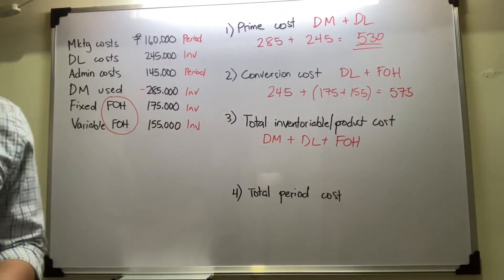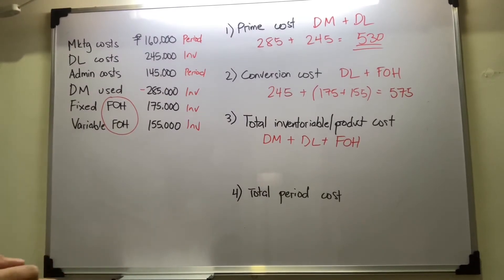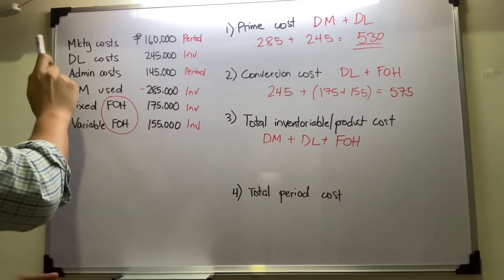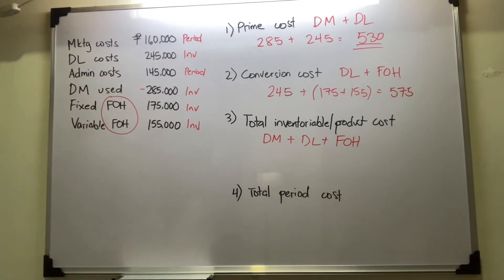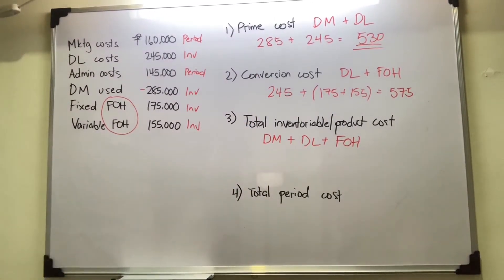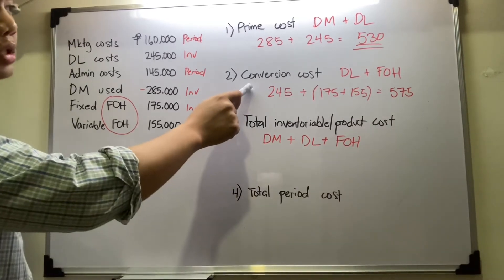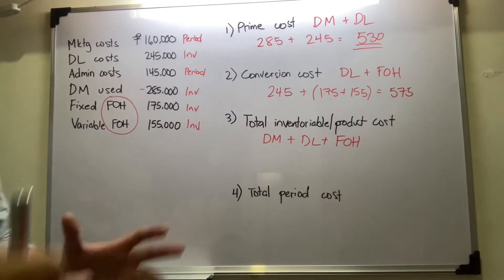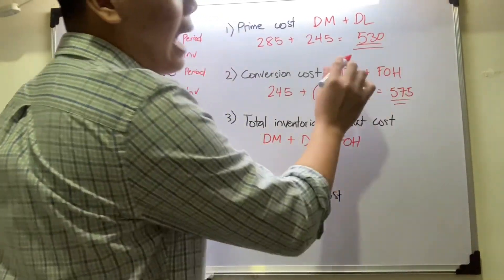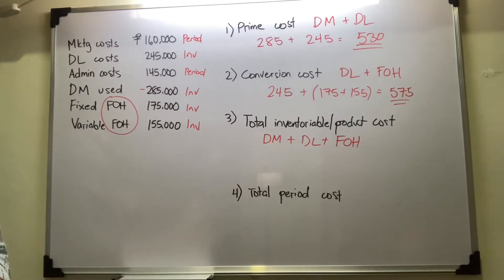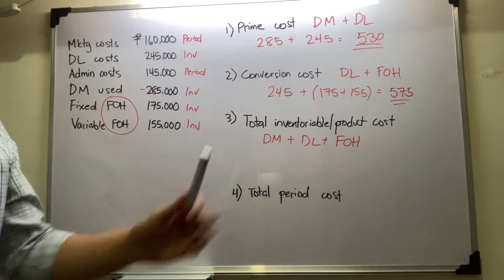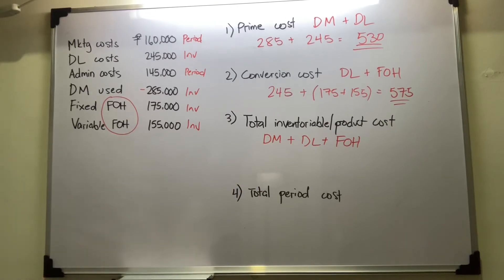The key point here — and this is where students get confused — is that total inventoriable cost is the sum of direct materials, direct labor, and factory overhead. It is not correct to add prime cost and conversion cost together to get inventoriable cost, because direct labor appears in both prime cost and conversion cost. So you would not add 530 and 575 to get inventoriable cost.